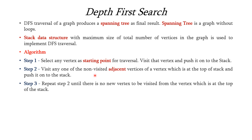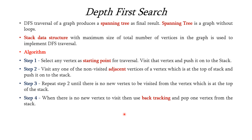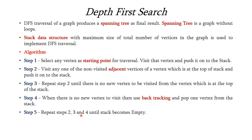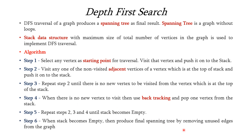Step 3 is we have to repeat step 2 until there are no new vertices to be visited from the vertex at the top of the stack. At that point we have to perform backtracking, which means we pop one vertex from the top of the stack. We repeat steps 2, 3, and 4 until the stack becomes empty, and finally we produce the final spanning tree by removing all unused edges from the graph.